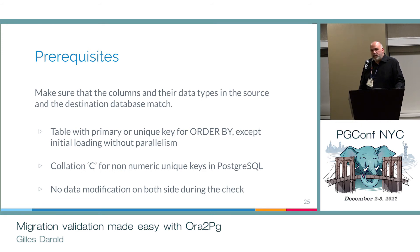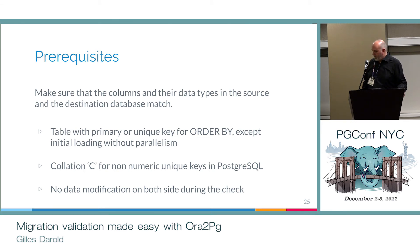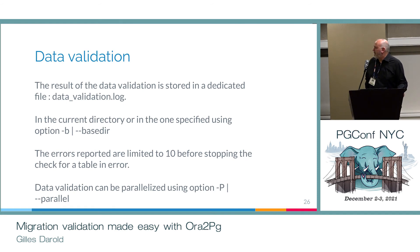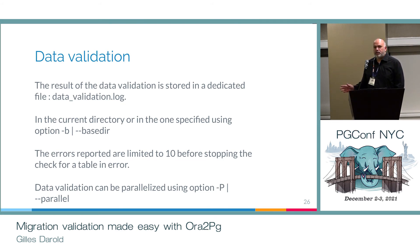With this primary key or unique index, an ORDER BY clause is applied, which is important to be able to compare the same things between the two databases. This can be avoided if you imported the data in a single process, because in Postgres when you import the data they are in the same order as in Oracle. But once there is a modification, the order will not be the same, so we need an ORDER BY clause. If you have a non-numeric primary key, it needs to have the 'C' collation in PostgreSQL to have the same sort order. And of course there must be no modification of the data. The data validation output will be exported to a file called data_validation.log.